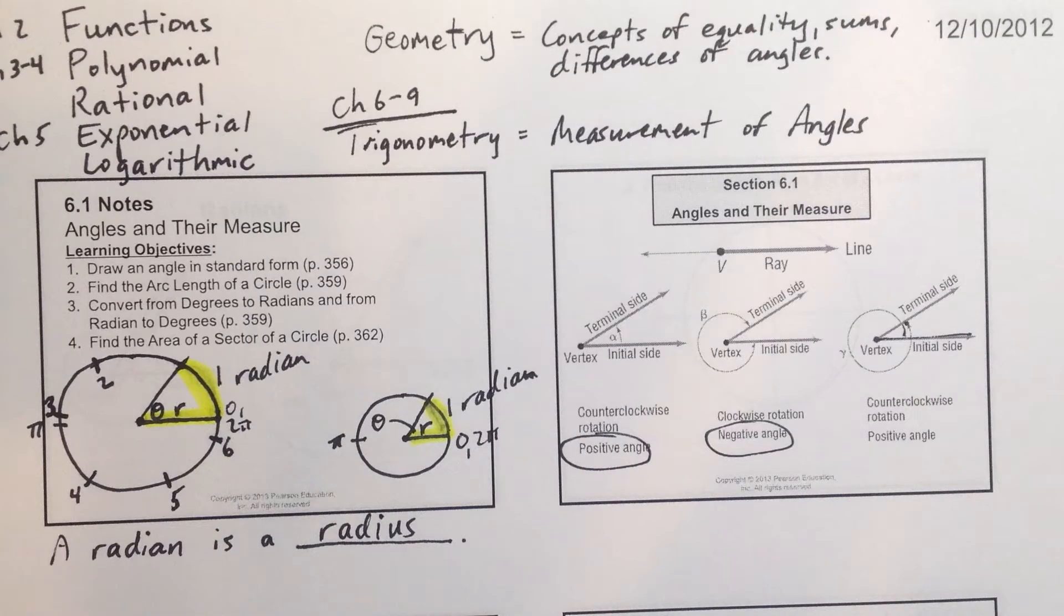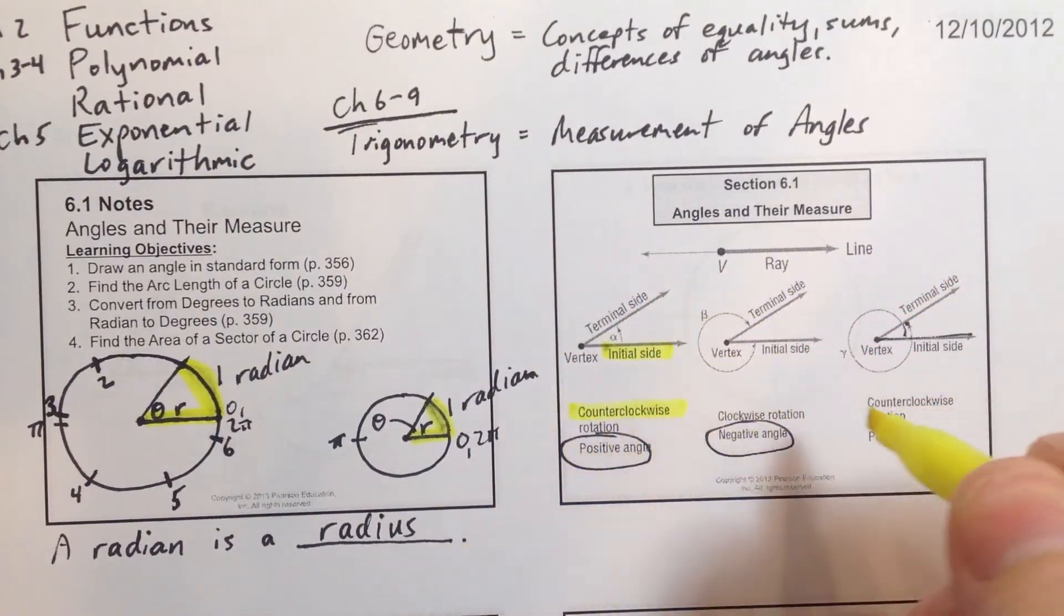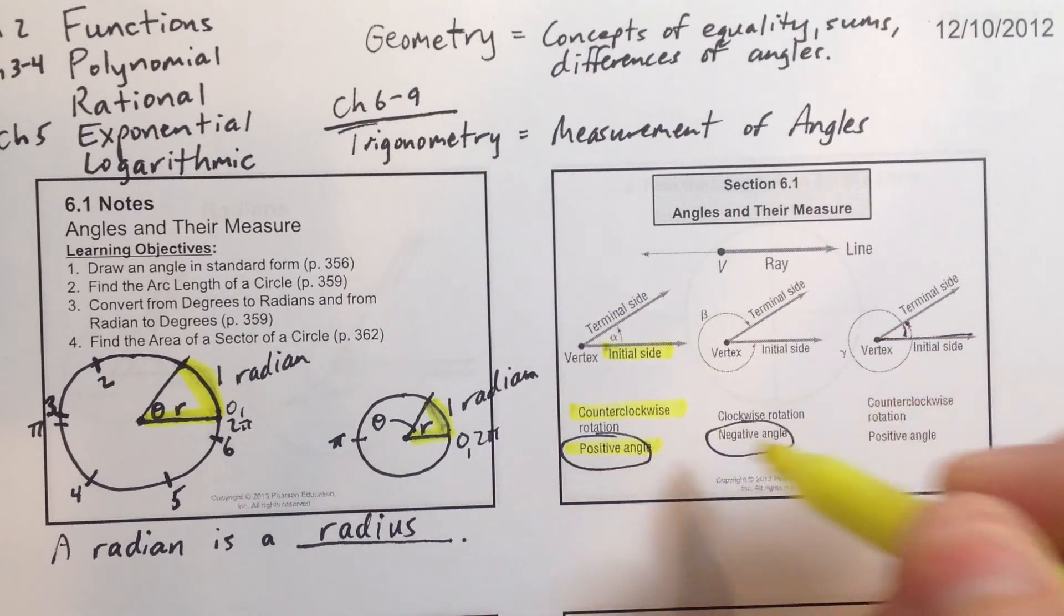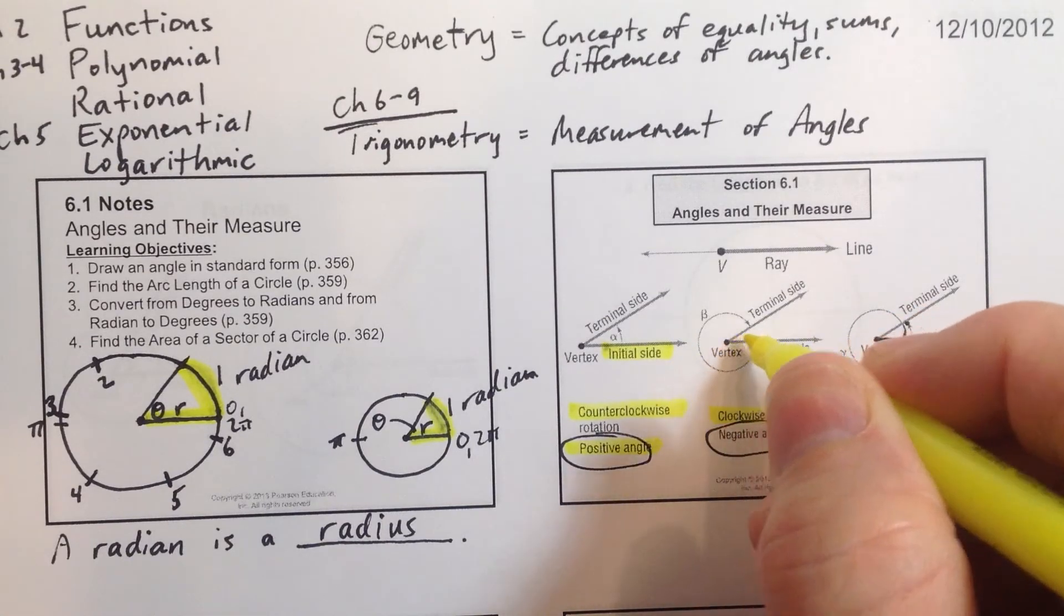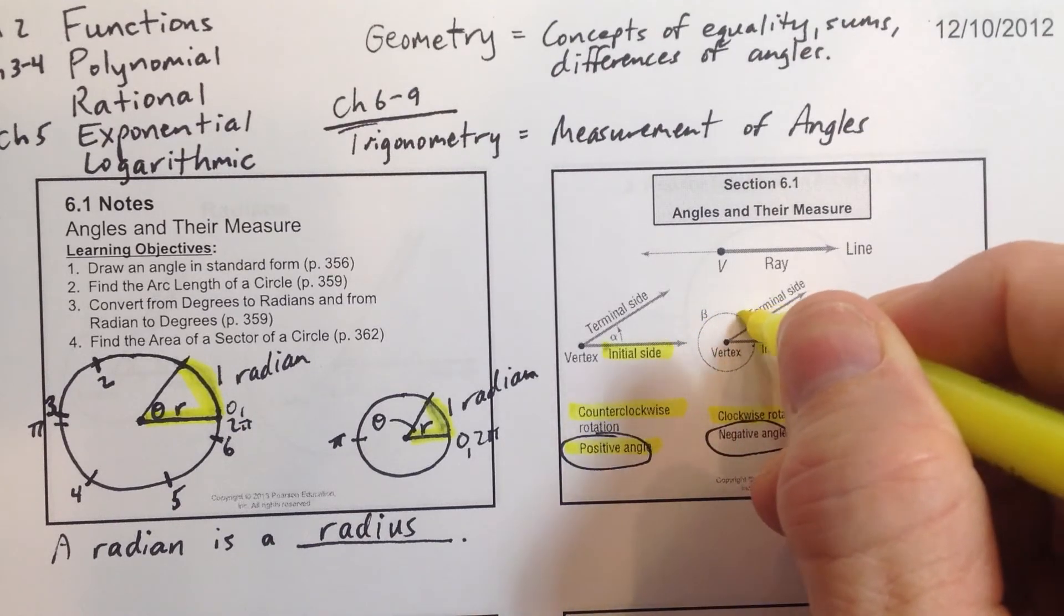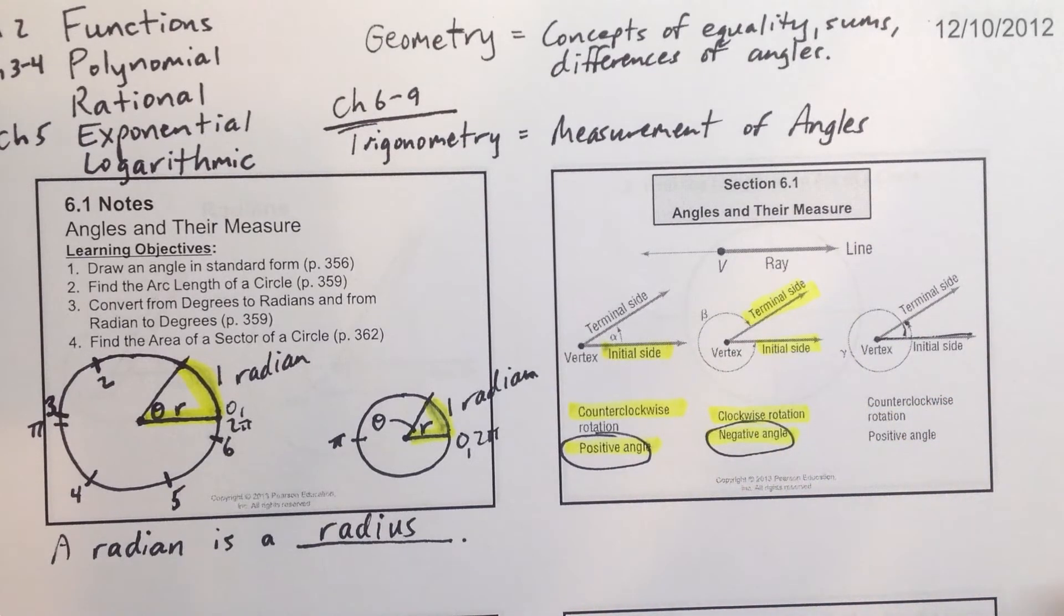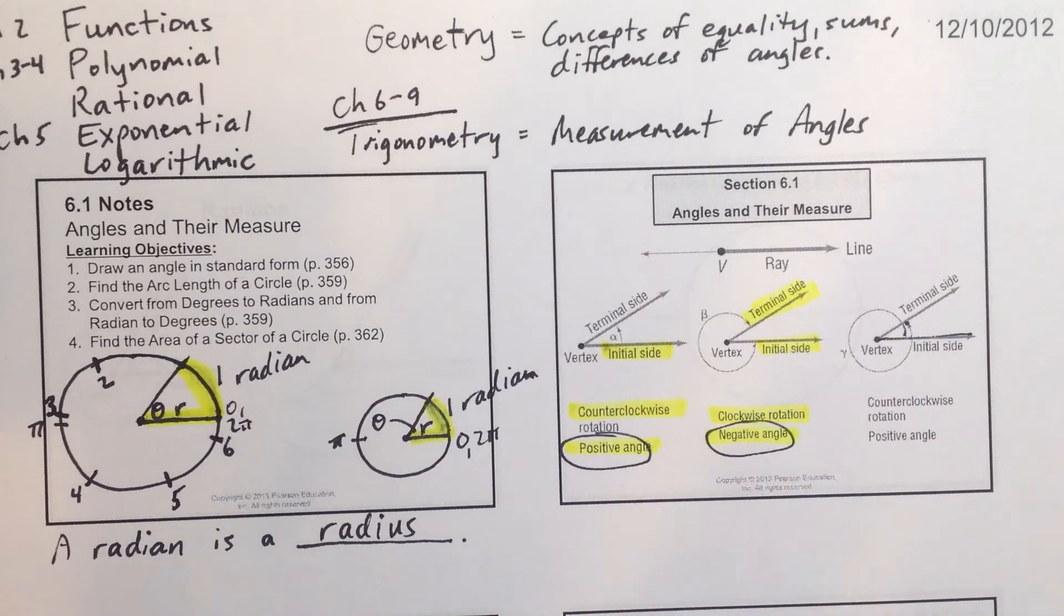When we do measure angles, we have to start with a side. And we call that side the initial side. So let's look over here. So we start with the initial side, and we always move counterclockwise, and that's a positive angle. So if we go counterclockwise, we're measuring a positive angle. Now, if we do go clockwise, if we wrap it around, start here at the initial side, and then go this direction clockwise, and where our terminal side is where we end, that's when we have to measure a negative angle. So we go clockwise for negative, counterclockwise for positive.